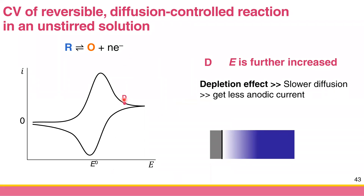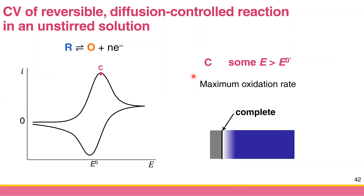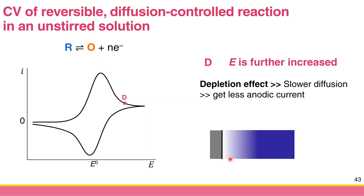At point D and beyond, the current continues to decrease because species farther from the electrode surface must be oxidized at the electrode surface. There is still some diffusion occurring, but at a very small rate compared to point C — this is why you still get some oxidation but it is slow.